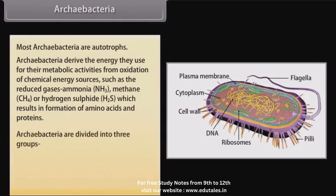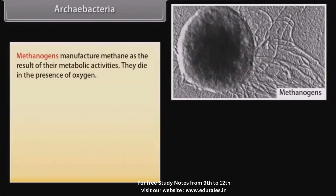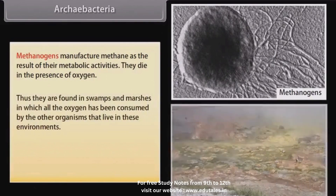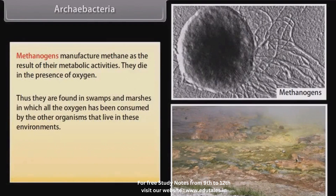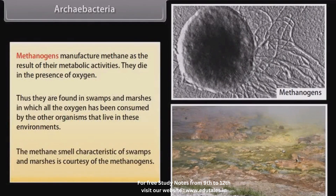Archaebacteria are divided into three groups: methanogens, thermoacidophiles, and halophiles. Methanogens manufacture methane as the result of their metabolic activities. Methanogens die in the presence of oxygen; thus, they are found in swamps and marshes in which all the oxygen has been consumed by other organisms. The methane smell characteristic of swamps and marshes is courtesy of the methanogens.